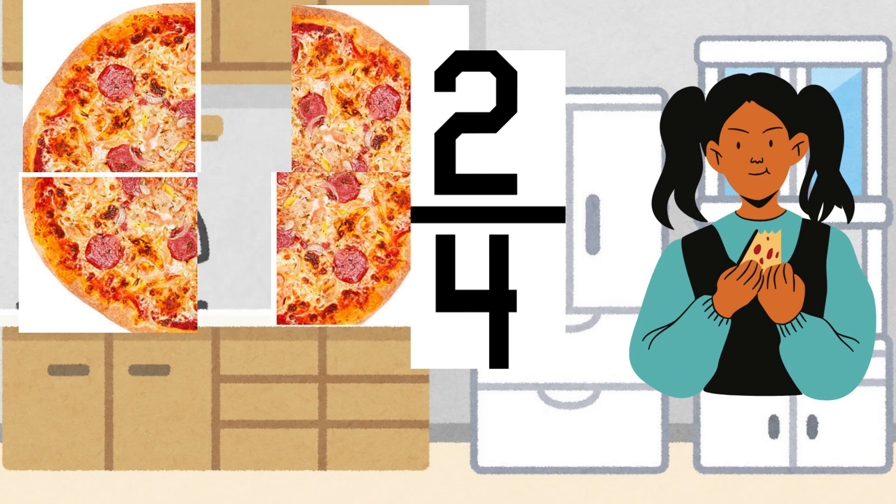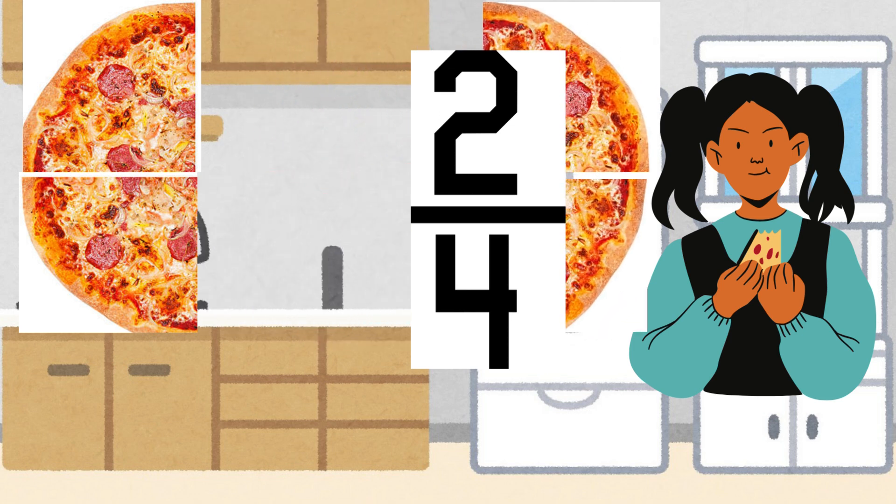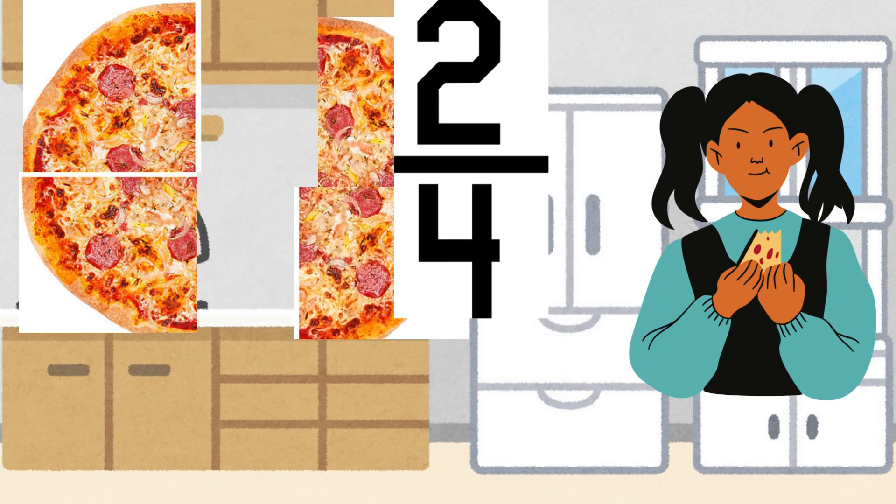Pizza 2. Bithia cuts hers into four equal parts and eats two parts. The eaten fraction is two over four.